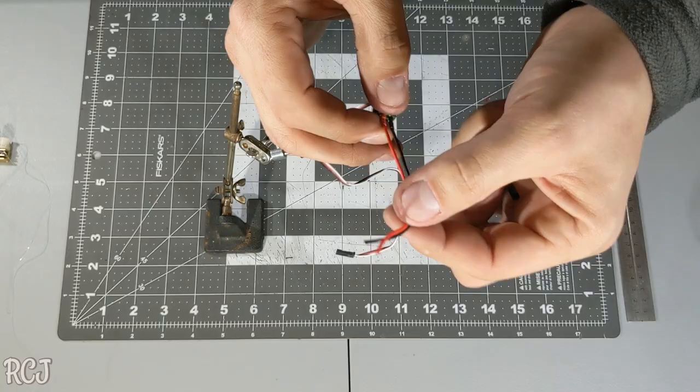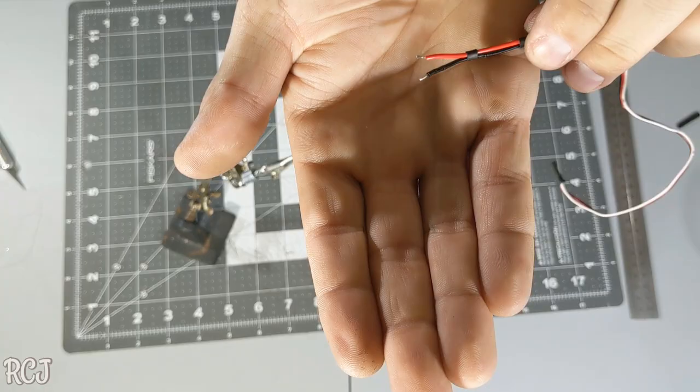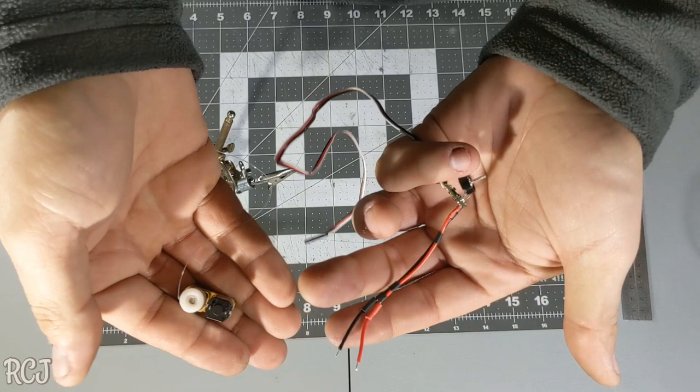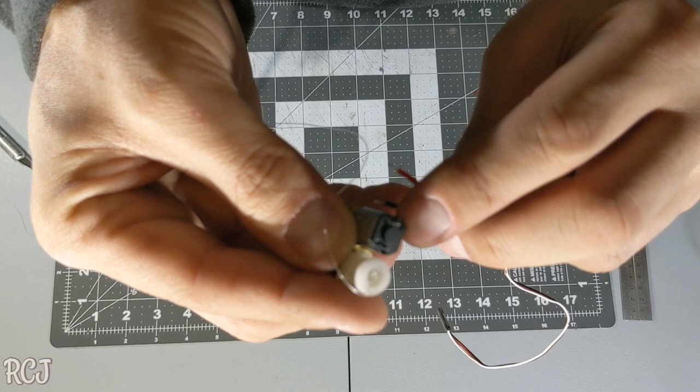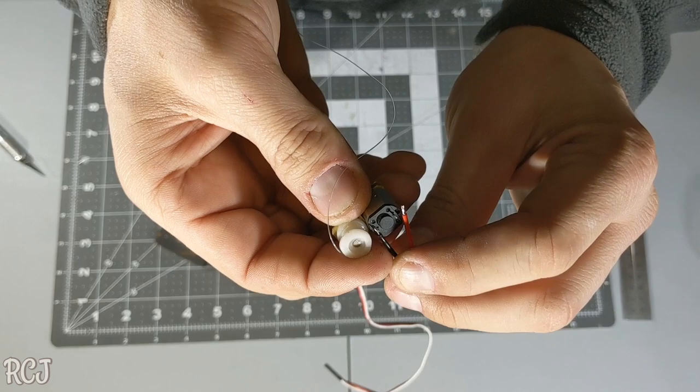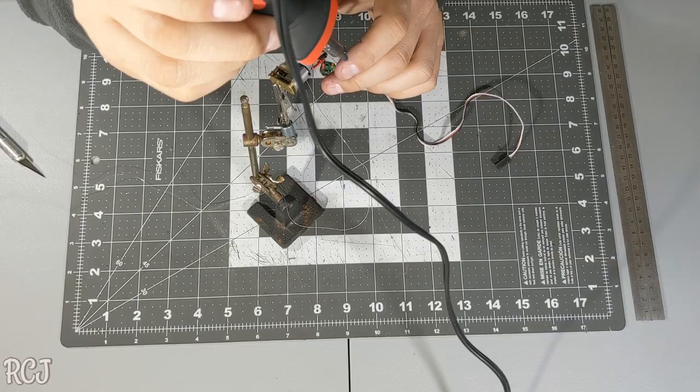These are the leads going to our motor. Now that we got the wires how we want them and as long as we want them, you can see a small positive on the motor. That's where we will be putting the red and the black will go on the opposite side.